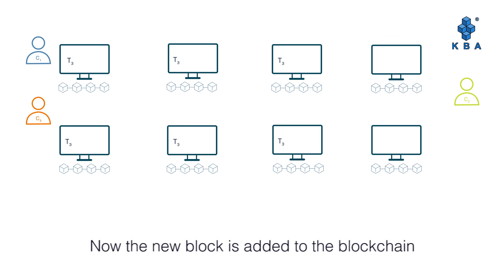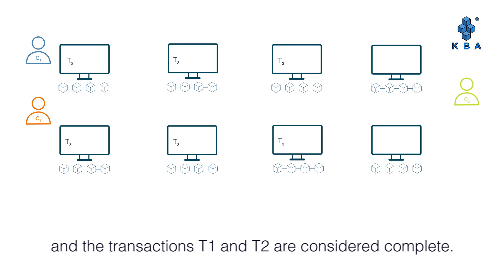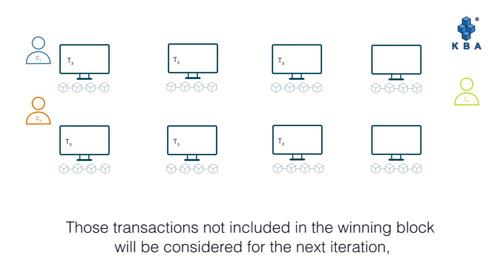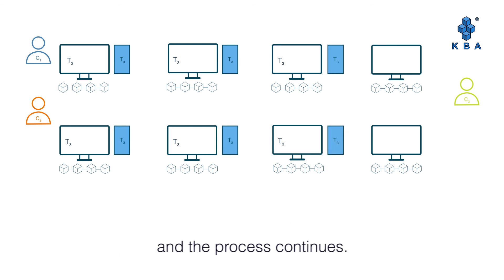The new block is added to the blockchain and the transactions T1 and T2 are considered complete. However, transactions not included in the winning block are retained in the memory pool. Those transactions will be considered for the next iteration, and the process continues.